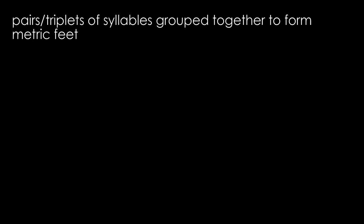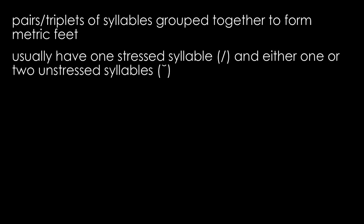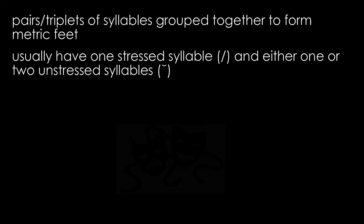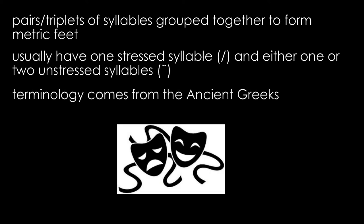In poetry, pairs or triplets of syllables are grouped together into units called metric feet. They usually have one stressed syllable and either one or two unstressed syllables, and these are usually repeated over the line. We're going to look at five different metric feet that crop up in the poems in the cluster and look at them in the context of the poems themselves. All these words come from the ancient Greeks who were writing poetry long before we were.